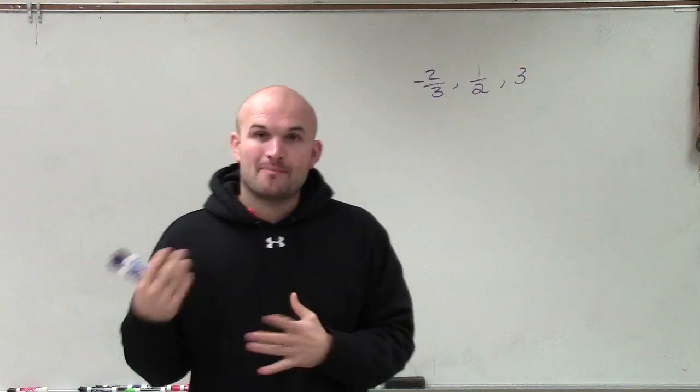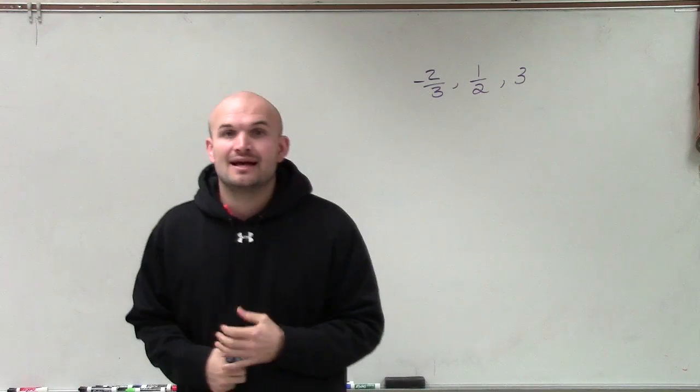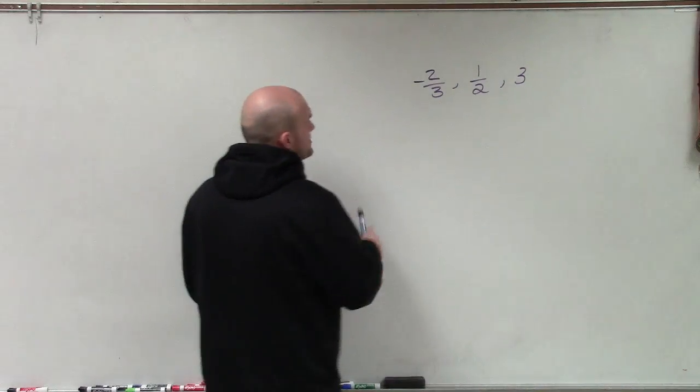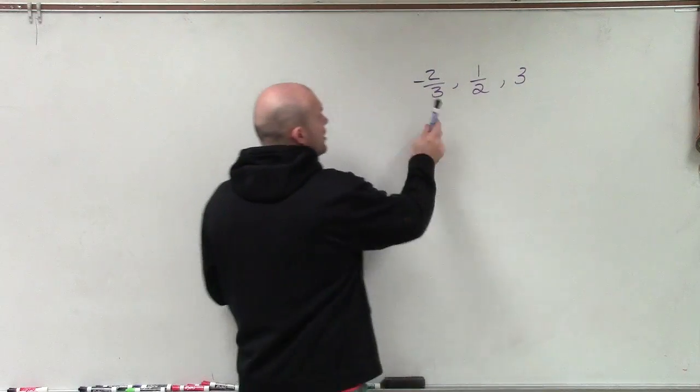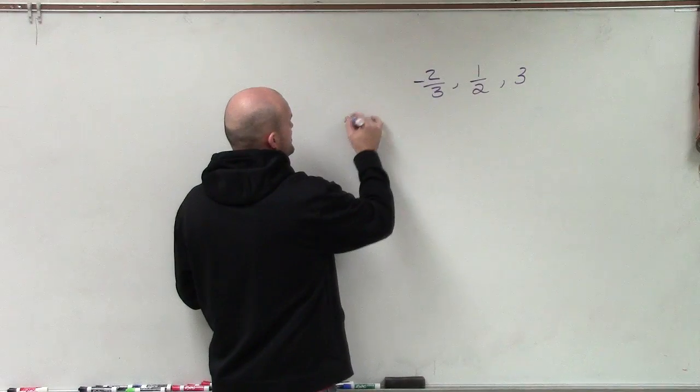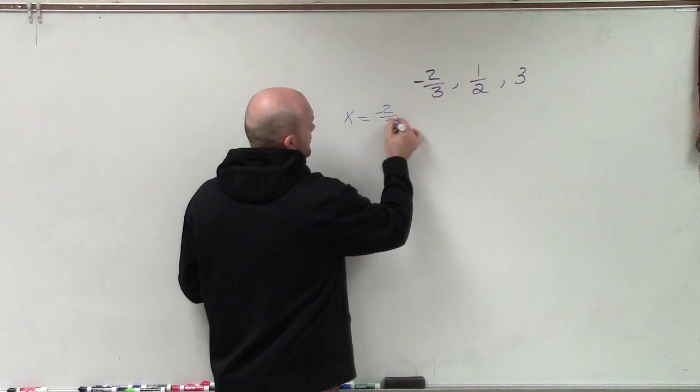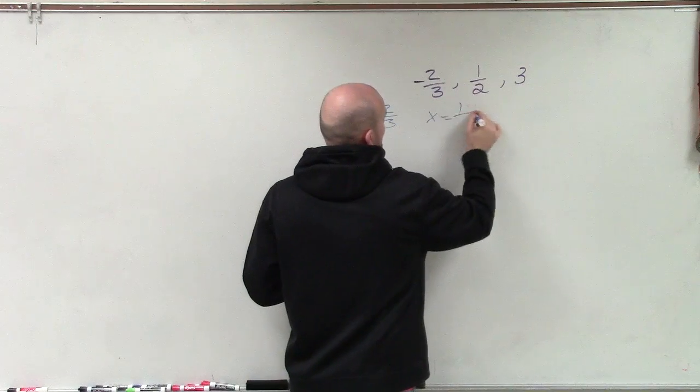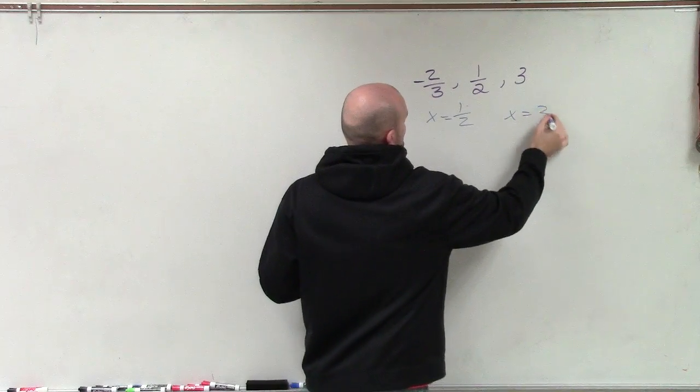Now, our polynomial that we're going to be determining, we want to have integer coefficients. So that's going to pose a problem when I have my zeros as fractions. Because usually what we do is we set each of our zeros equal to 0, x equals 2/3, x equals positive 1/2, and x equals 3.